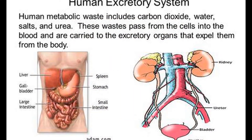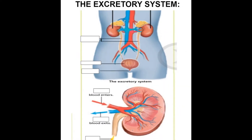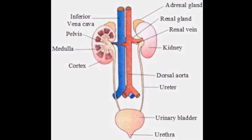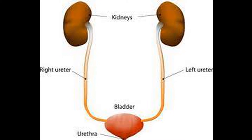Excretion is the removal of all toxic and unwanted metabolic waste products from the body. The renal excretory system, or simply the excretory system in humans, consists of a pair of kidneys, two ureters, a urinary bladder and a urethra.